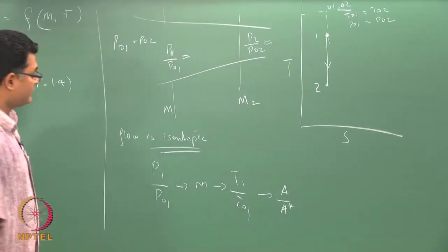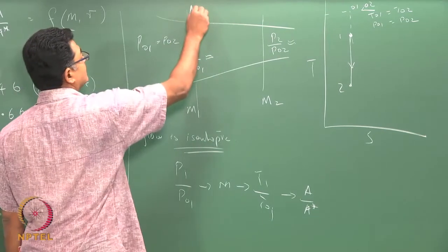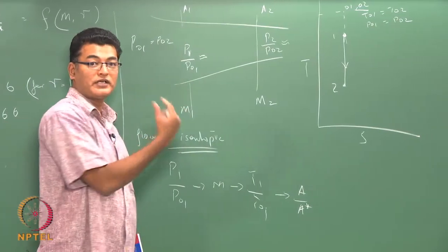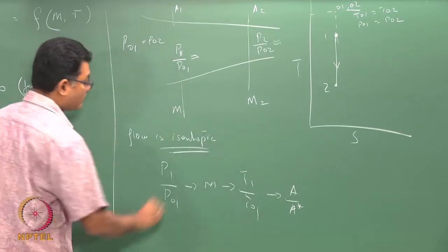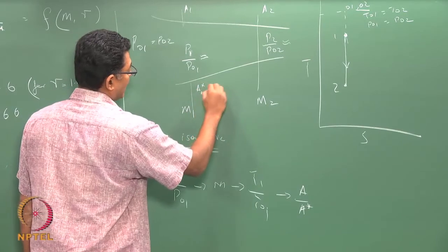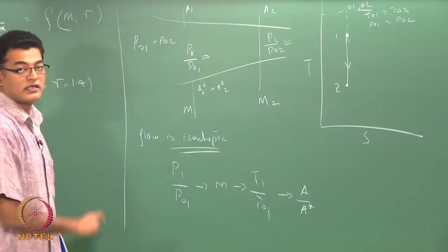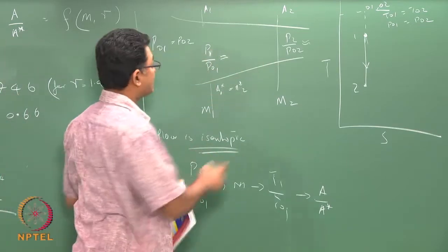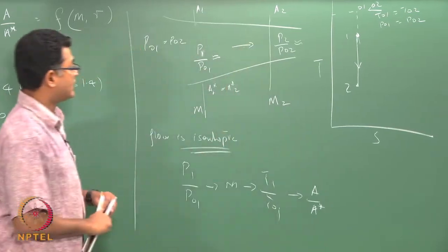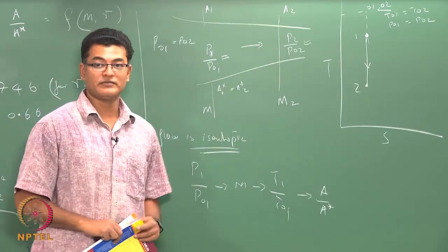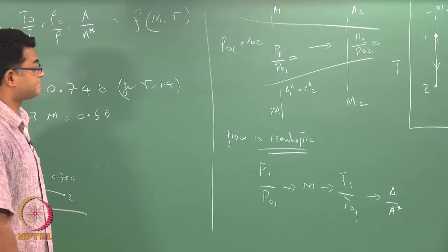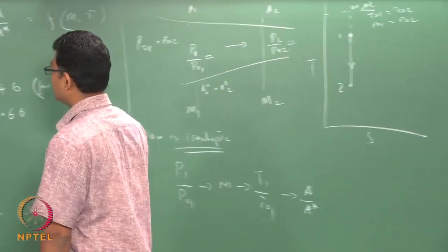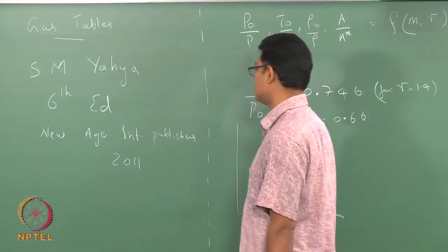What does A/A* tell you? If I know the area here, A* would tell you how much it has to reduce to get M equals 1. And since it is isentropic, we know A*1 equals A*2, or the A* along the stream-wise direction. Because this is assumed 1D, the A* of each of these cross-sections are going to be the same under the isentropic assumption — something we have already seen. This brings in a lot of advantage in using your gas tables.